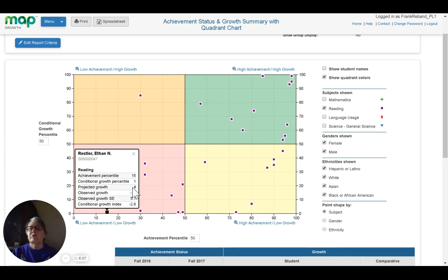His projected growth was four. His observed growth was a negative 14. So he went down, and that could be was it a bad test taking day, or have there been other issues that I need to be aware of? The standard error for his observed growth and a conditional growth index, which is also very low.